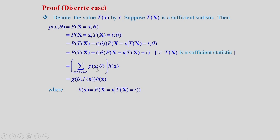This term can be expanded: the denominator becomes a summation of the joint PMF for those values of X for which T(X) = t, multiplied by this part. This establishes that the joint PMF is a product of G and H, where G is a function of theta and T(X), and H is the function P(X = x | T(X) = t), which is a function of X only.